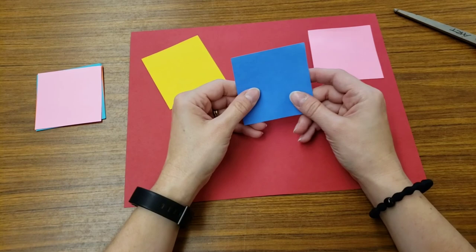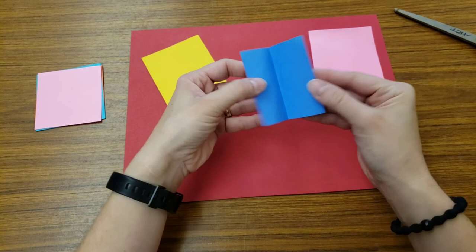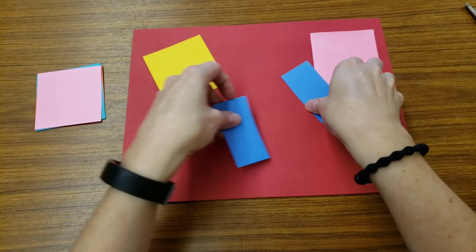In order to take a square and make it into a rectangle, if I want it to be perfectly even, I can fold it in half, open it up again, and then cut on the fold. Now I have two rectangles from that square.